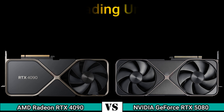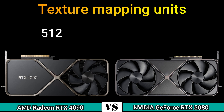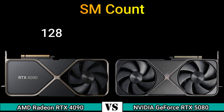Shading units 16384 and 10752. Texture mapping units 512 and 336. Render output units 176 and 128. SM count 128 and 84.